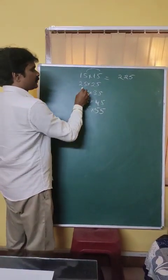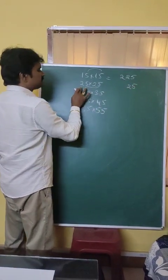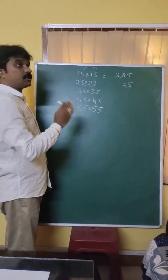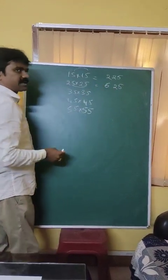Let us see this example. 5 into 5, 25. Okay. This is 2. The next number after 2 is 3. 2 into 3, 6. The answer is 625.